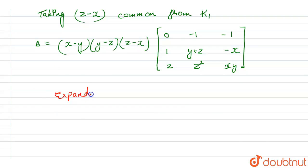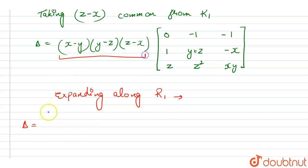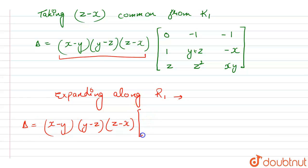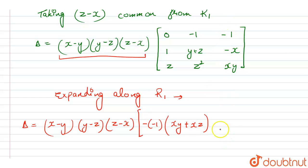We expand this matrix along row 1. Since the first element is 0, we skip it. Taking the value −1: it gives −(−1) times the minor, which is 1·xy − (−x)·z = xy + xz. Then minus 1 times the next minor: z²−z(y+z) = z²−zy−z² = −zy.